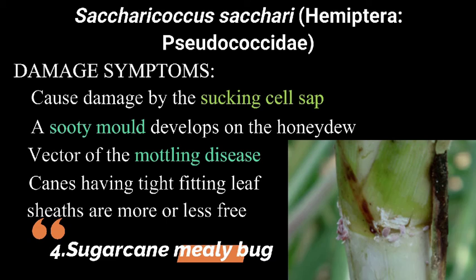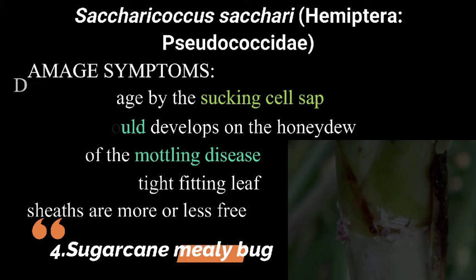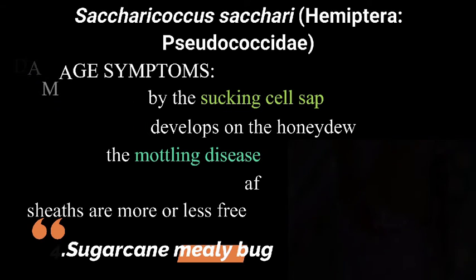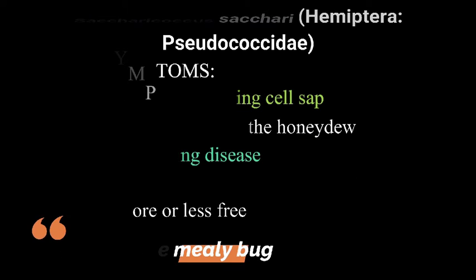Sugarcane mealy bug: Saccharicoccus sacchari, which belongs to the family Pseudococcidae and order Hemiptera. Damage symptoms: it causes damage by sucking cell sap; a sooty mold develops on the honeydew secretion of the pest. It is the vector of the mottling disease of sugarcane. Canes having tight-fitting leaf sheaths are more or less free from the sugarcane mealy bug.